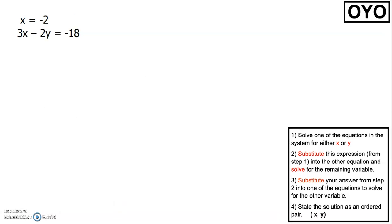This next problem is an on-your-own problem with the system x equals negative 2 and 3x minus 2y equals negative 18.